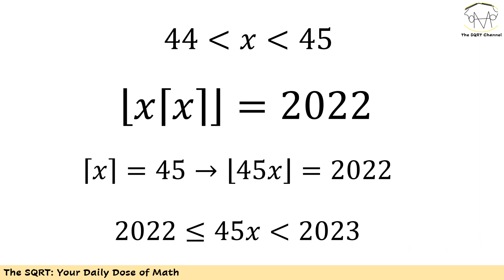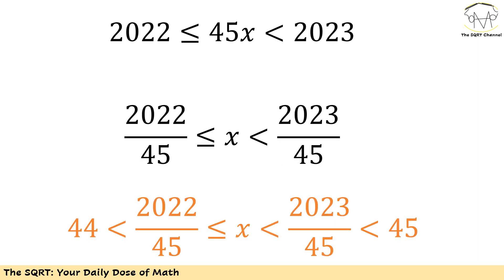The key point is: when x is between 44 and 45, ceiling(x) = 45. So we need floor(45x) = 2022. If the floor of something is 2022, that term is between 2022 and 2023, with equality on the lower side. So we have 45x between 2022 and 2023, with equality on the lower side.